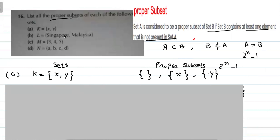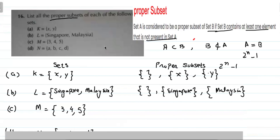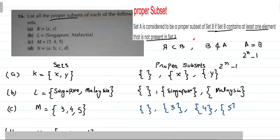Part B: {Singapore, Malaysia}. Proper subsets: φ, {Singapore}, {Malaysia}. Part C: M = {3, 4, 5}. Proper subsets: φ, {3}, {4}, {5}, {3,4}, {4,5}, {3,5}. Total = 2^3 − 1 = 7.